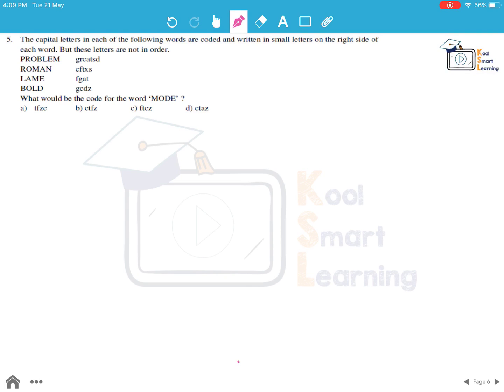Now if we see in bold we have G, C, D, Z. Now D we know is clearly not showing up. If we see B it is showing up in problem. If we see O it is showing up in problem in Roman. If we see L it is showing up in lame. But D is not showing up in any of these. And if we look at this coded word, we see that G, C and D are showing up in these. But Z is not showing up anywhere. So this means D is Z.